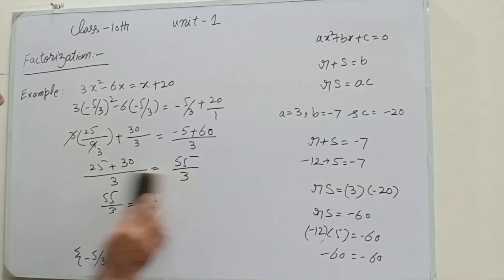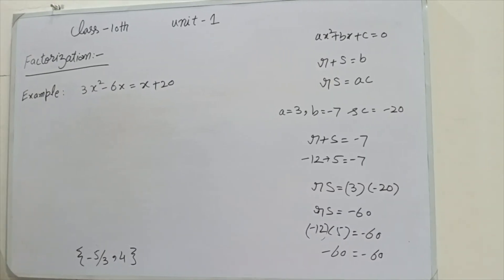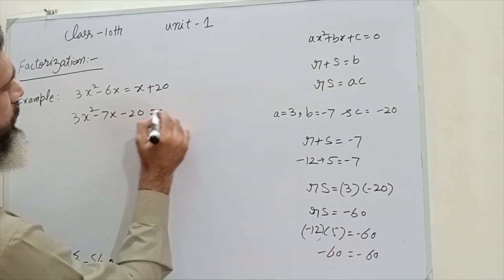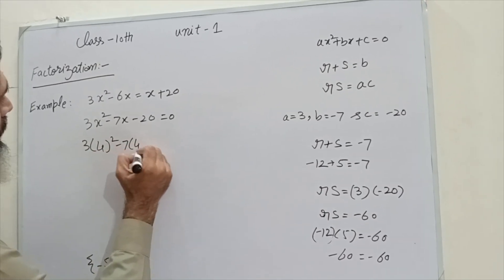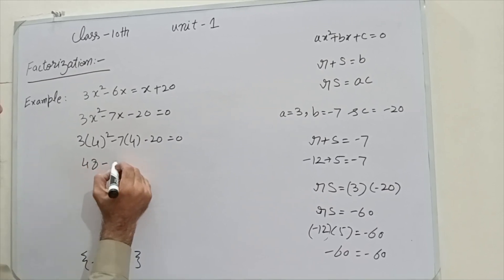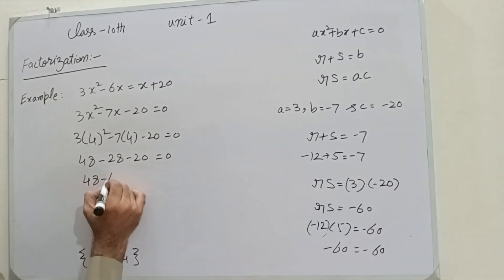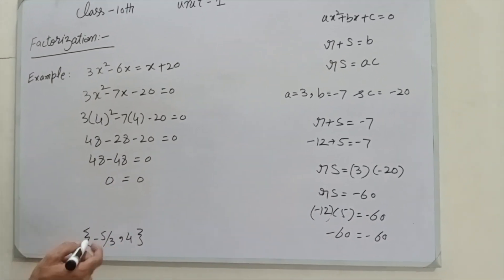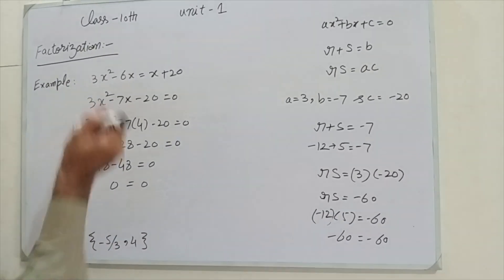We also verify the second value. Substituting x equals 4 into the standard form 3x² minus 7x minus 20 equals 0: 3 times 16 minus 28 minus 20 gives 48 minus 48 equals 0. So x equals 4 also satisfies the equation, confirming both solution values are correct.